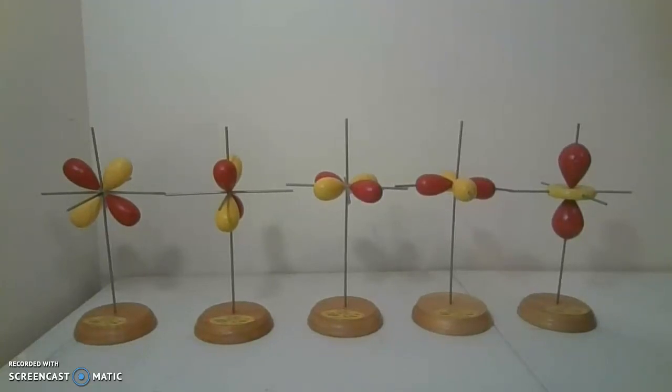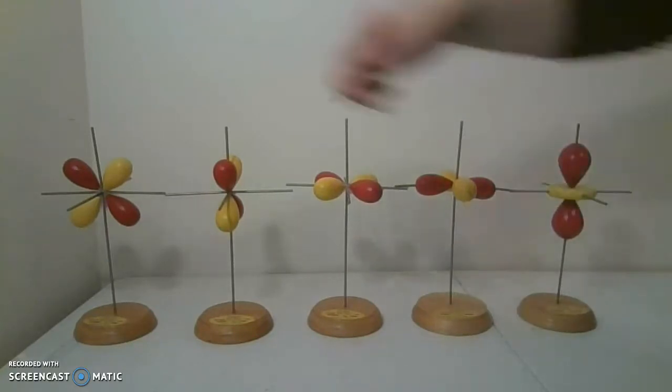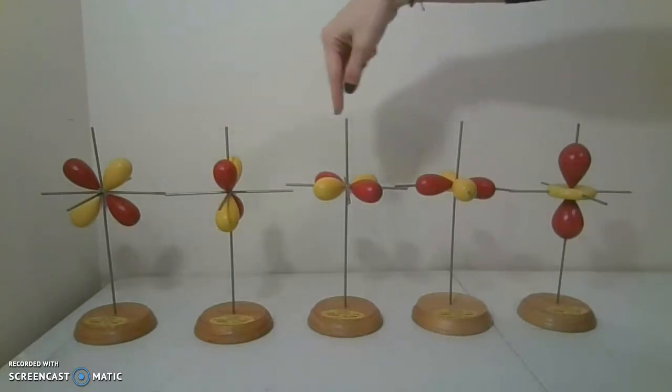All right, the third type of orbital that we have models for here is the d-orbitals, and there are five different types of d-orbitals, as you can see here: one, two, three, four, five.